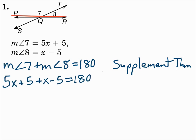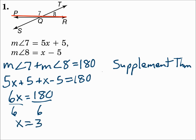Substitute 5x + 5 for the measure of angle 7, and x − 5 for the measure of angle 8. Combine like terms: 5x + x is 6x, and 5 − 5 cancels out, so 6x = 180. Divide both sides by 6, and x = 30.